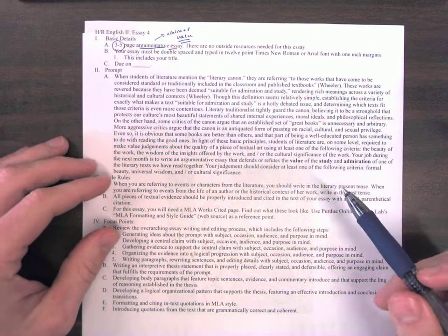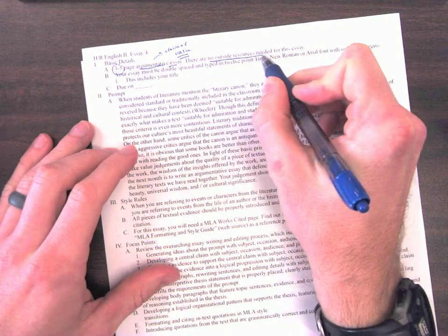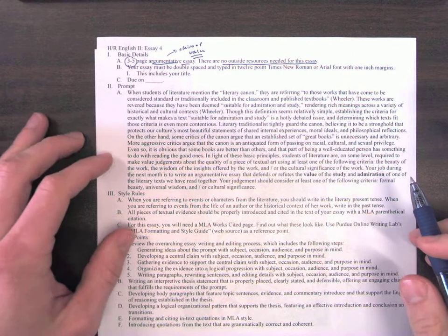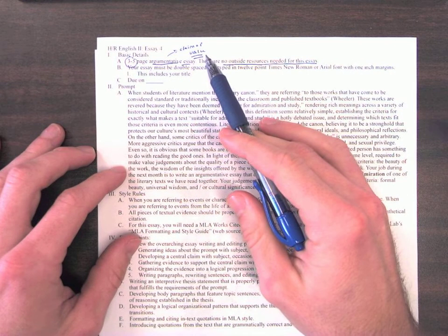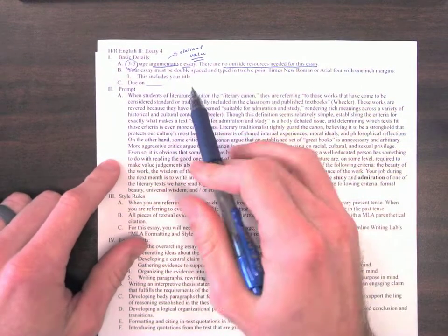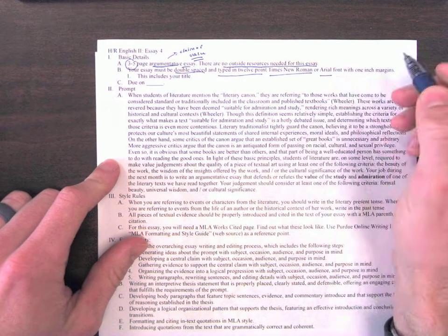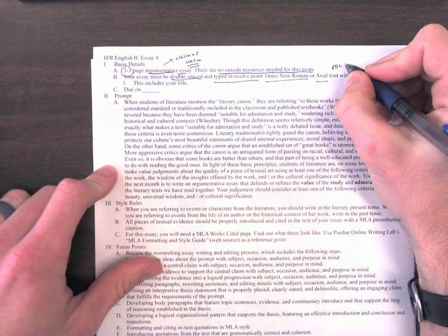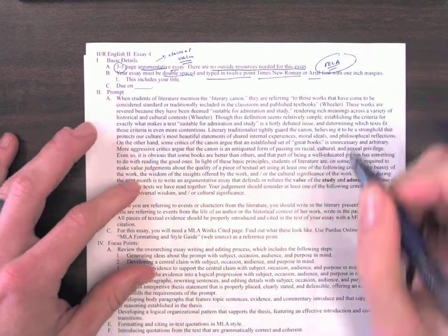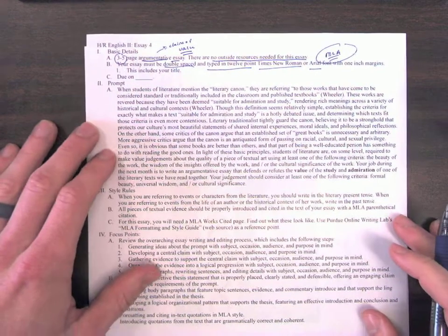The stronger your support is, the more persuasive your argument. So there are no outside resources that are needed for this essay. You can simply defend your claim of value, support your evaluatory argument with your own reasons. The essay needs to be double-spaced and typed in 12-point Times New Roman or Arial font. In other words, it needs to follow MLA formatting guidelines. That's because here in this English class, we follow the Modern Language Association's standards for formatting academic documents.